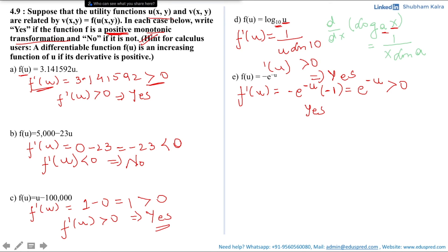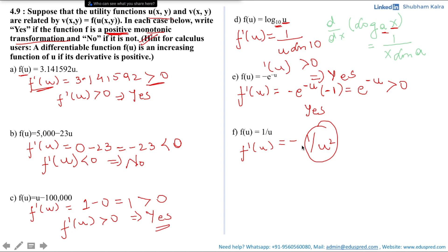Part 6: f(u) = 1/u. Differentiating: f′(u) = -1/u². Since u² is positive, multiplying by -1 gives a negative result. So f′(u) < 0, which means this is not a positive monotonic transformation. The answer is no.